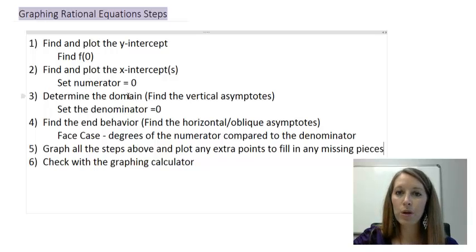Finding the domain, really we're focusing on finding the vertical asymptotes, and we do that by figuring out where our function is not defined. Since it's a rational or a fraction, we do that by setting the denominator equal to 0. And finding the end behavior, meaning the horizontal or oblique asymptotes, we do this by using the face case, looking at the degrees of the numerator compared to the degrees of the denominator.